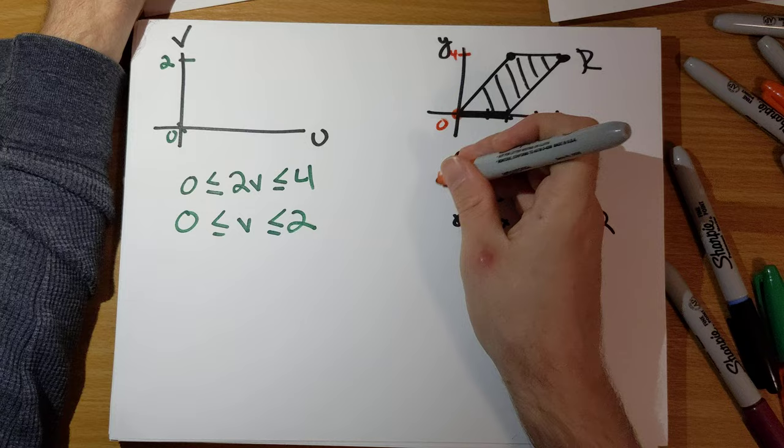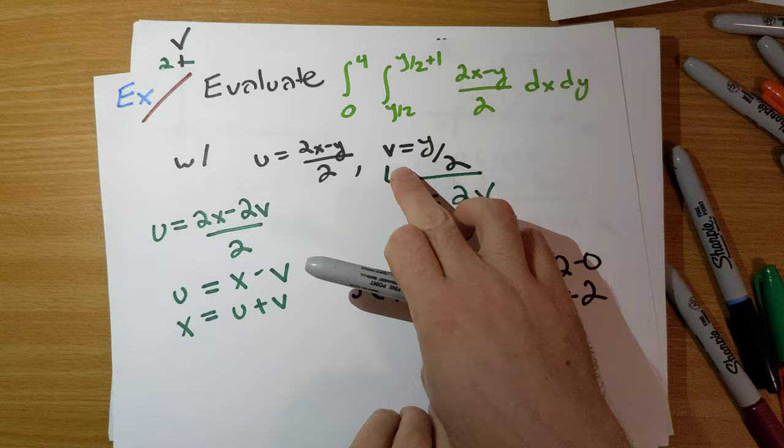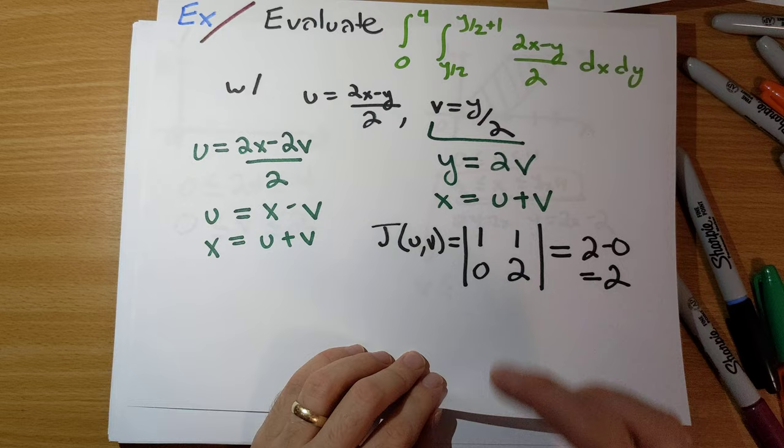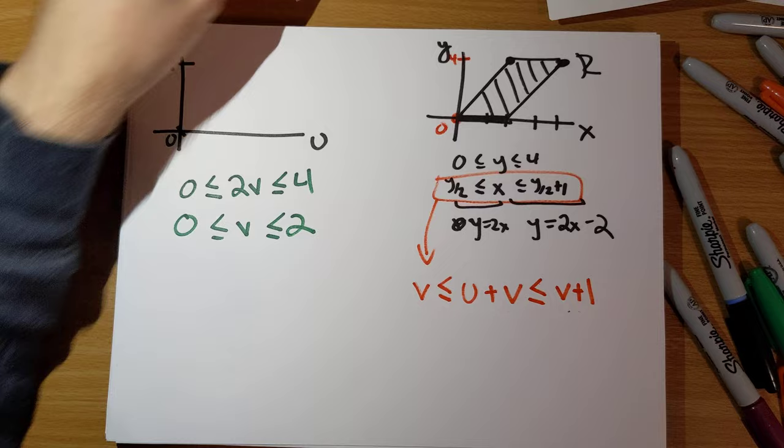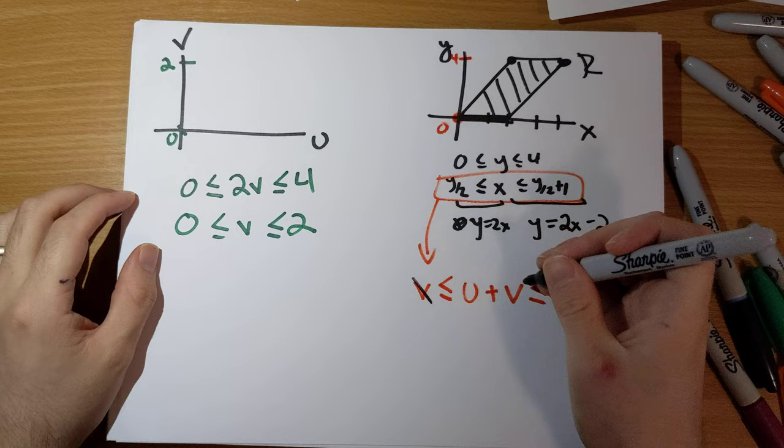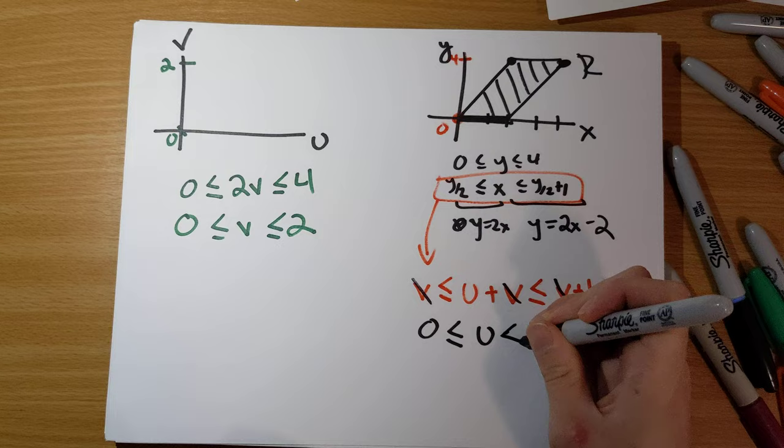Y over 2, we know that is V. X, we know X is U plus V. And Y over 2 plus 1, that's V plus 1. And look, we have a V, we have a V, we have a V. We can subtract V from all three sides of these inequalities. And we're left with 0 is less than or equal to U is less than or equal to 1.